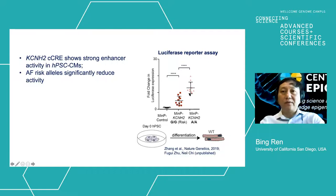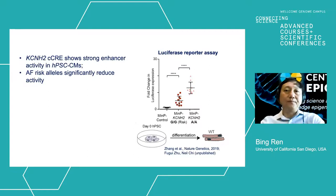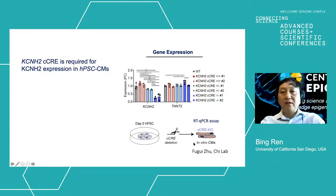We first performed luciferase reporter assays, taking the element and constructing it linked to a luciferase reporter gene, then transfecting it into the cardiomyocytes and asking whether luciferase gene expression is turned on by this element. The reference allele showed very robust reporter activity in the cardiomyocytes. The risk allele, in which the A is switched to a G on that enhancer element, showed very much reduced enhancer activity in this reporter assay, suggesting that this risk allele could indeed affect the enhancer activity.